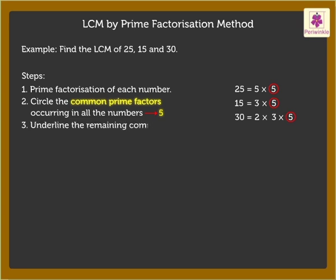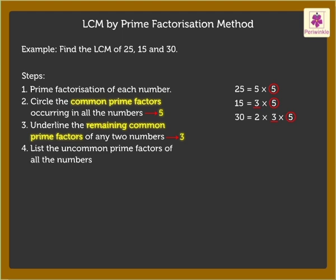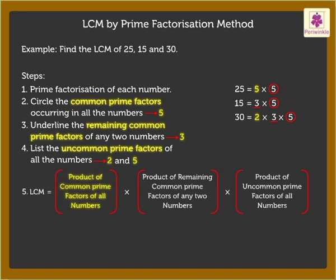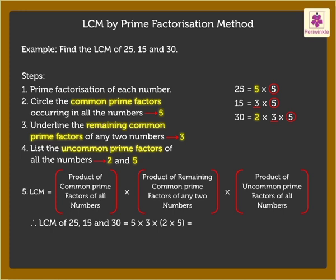Step 3: Underline the remaining common prime factors of any two numbers. Here, we get the remaining common factor as 3. Step 4: List the uncommon prime factors of all the numbers. The uncommon factors are 2 and 5. The LCM is the product of the common prime factors of all numbers, remaining common prime factors of any two numbers, and uncommon prime factors. Thus, LCM of 25, 15 and 30 is 5 × 3 × 2 × 5 = 150.